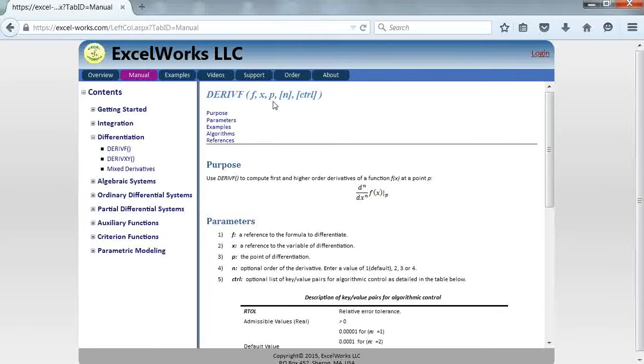It also takes two additional optional parameters: the order of the derivative. By default, it computes the first order derivative, but you can pass any value from 1 to 4. It can at most compute the fourth order derivative.